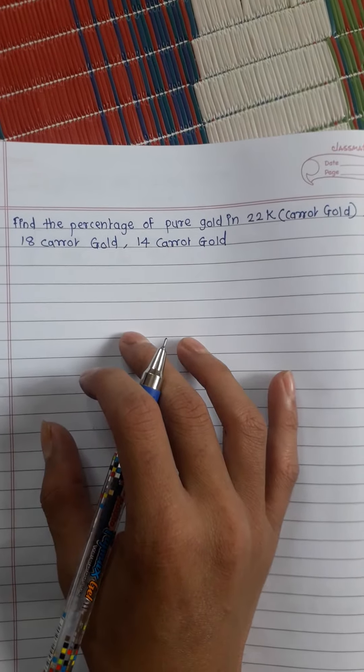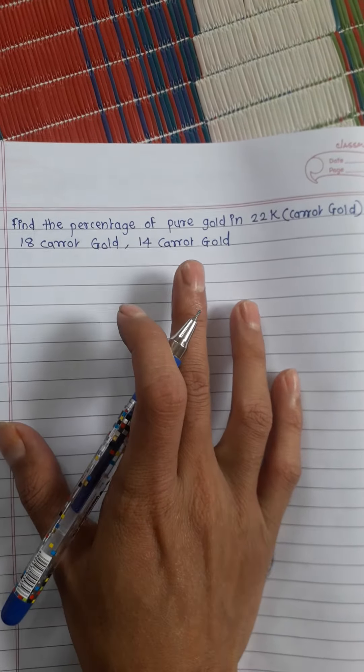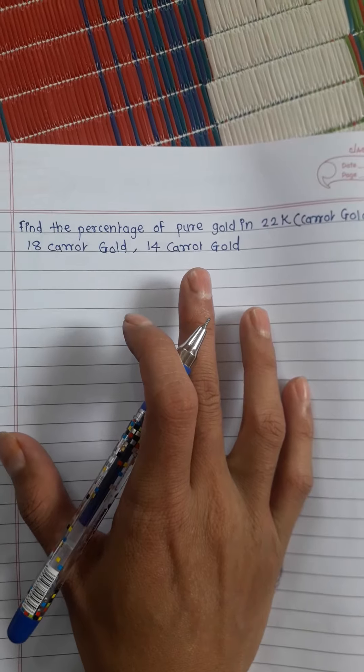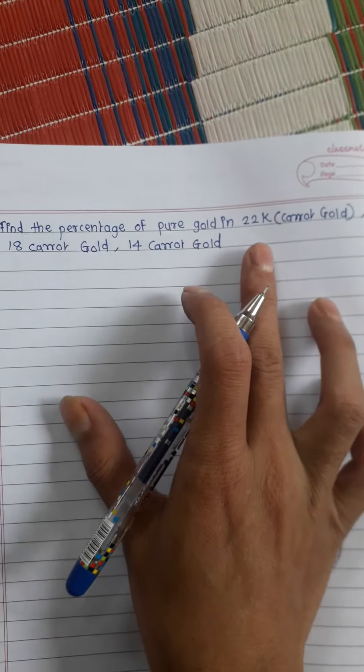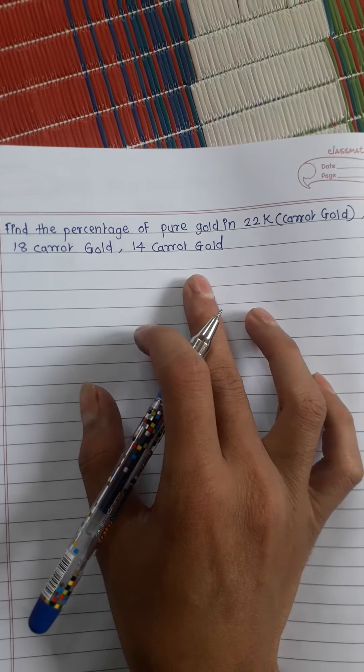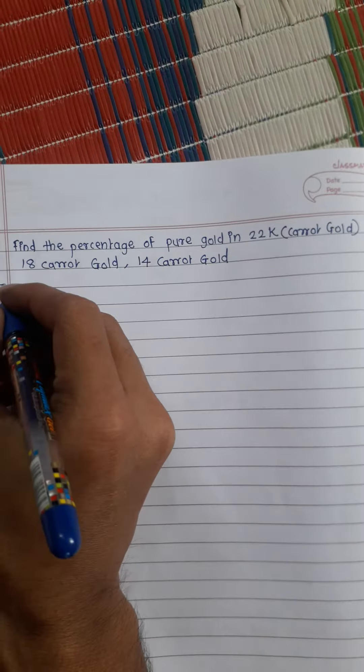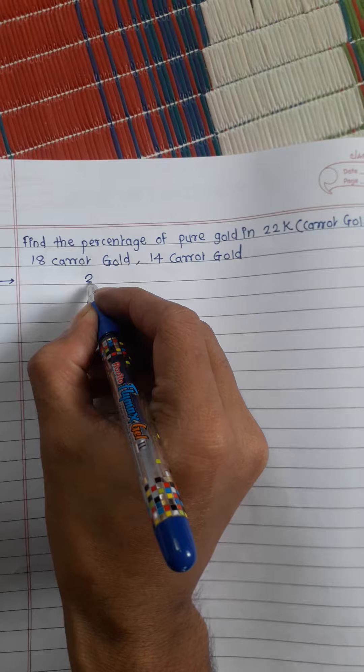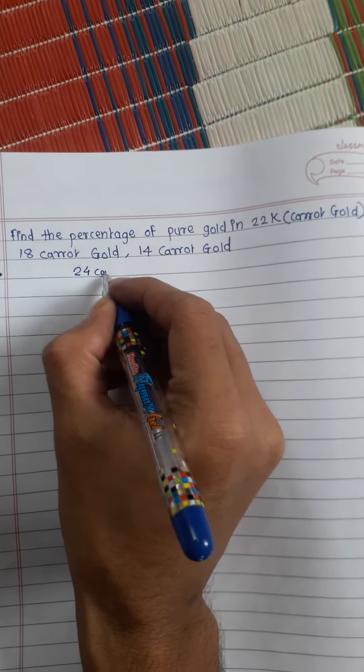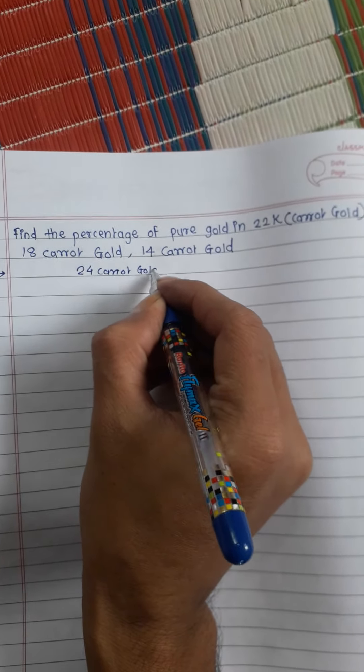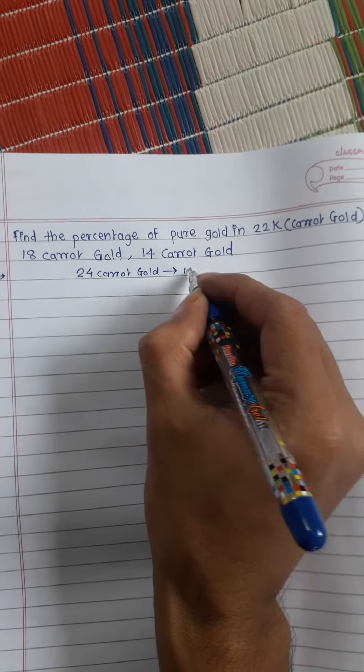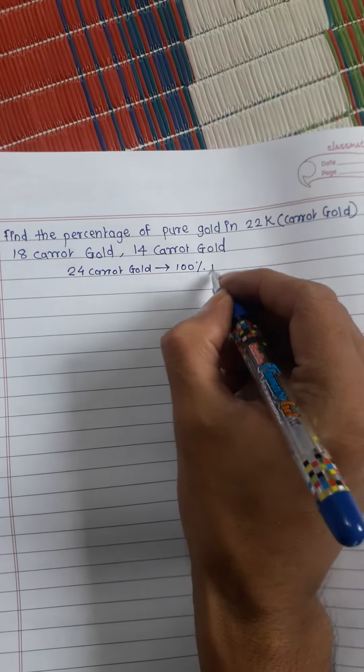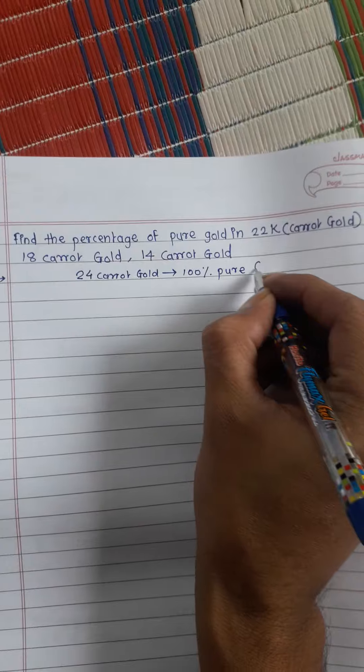Welcome friends, today we will see how to calculate the percentage of pure gold in 22 carat, 18 carat, 14 carat gold. As we know that 24 carat gold means 100% pure gold.